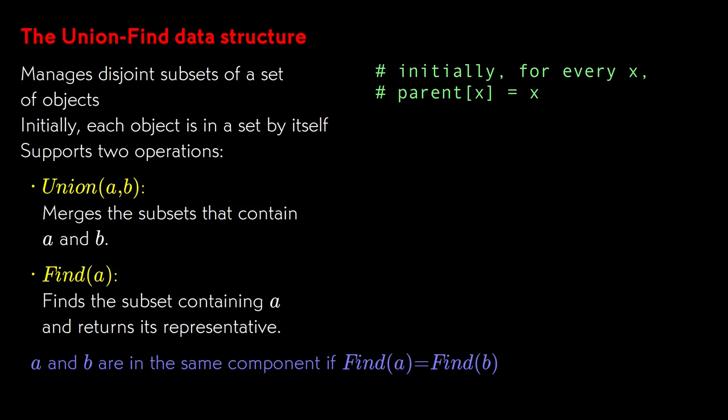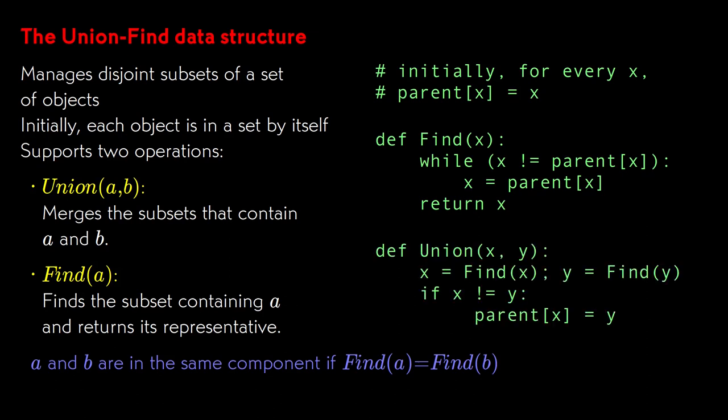We can do inefficient management of the sets by maintaining a single link with each object called parent. Initially, the parent of each object is itself. The general rule is that an object that is its own parent is the representative of its set. The other links form a tree pointing upward toward the root. To find the representative of an object's set, we simply follow the parent links until we reach the root of the tree or the representative of the set. And to unite two objects, we find the representatives of their sets. If they're different, we combine the sets by changing the parent link of one to point to the other.